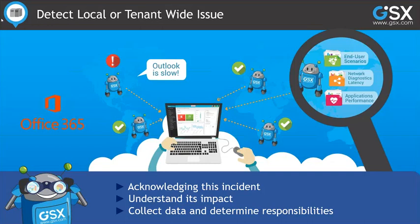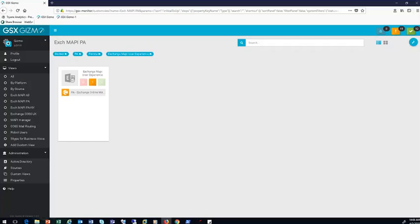Being able to differentiate between a local IT issue and a tenant-wide issue can be very challenging — it's something that faces a lot of organizations on a daily basis. For this particular task, we have three robot users set up at three different locations: one at our office in Pennsylvania, another in our New York office, and another robot user in Azure. They are all performing the same Office 365 monitoring under the same load. In the dashboard, green means everything is good — any other color indicates some type of issue. Here we can clearly see we're having an issue in our Pennsylvania office.